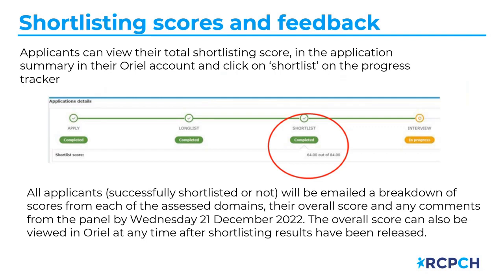Regarding shortlisting scores and feedback: applicants can view their total shortlisting score in the application summary in their Oriel account once shortlisting is complete. You'll be able to see your score and what it's out of by clicking 'shortlist' on the progress tracker. All applicants — whether shortlisted or not — will be emailed a breakdown of scores from each assessed domain, the overall score, and any panel comments, by Wednesday the 21st of December.